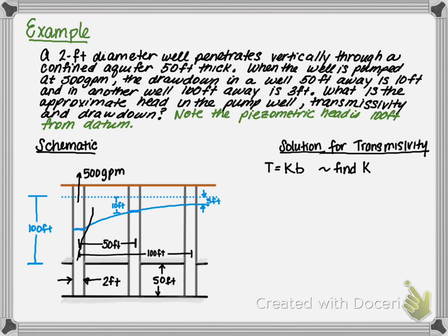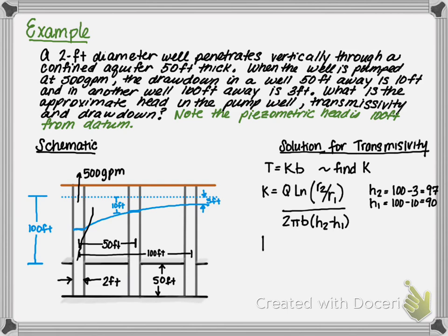We don't know K, thus we need to solve it. K can be solved by rearranging the flow rate equation. Next, we're going to solve for H2 and H1. Realizing H2 and H1 is measured from the datum, not from the water surface table.